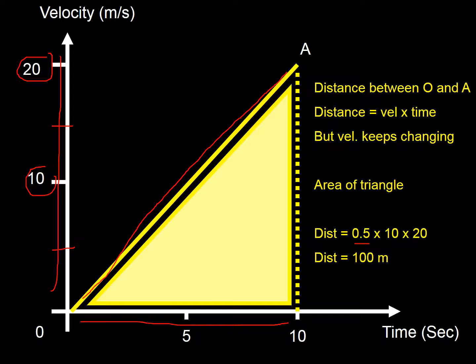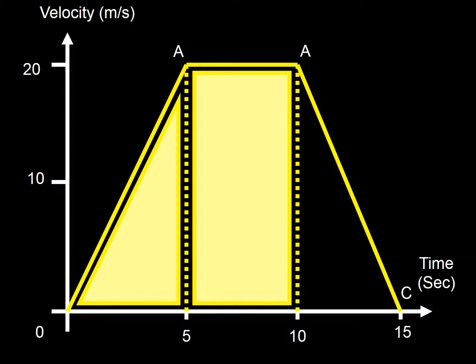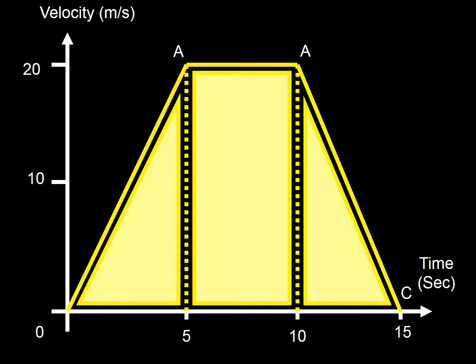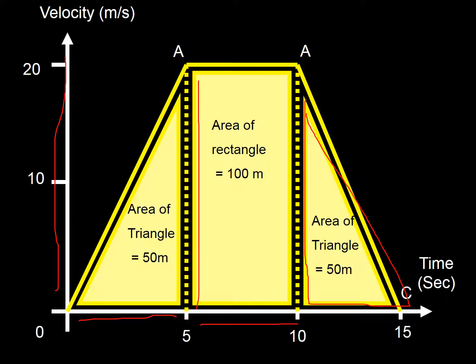So if you're on a velocity-time graph and need to work out a distance, work out the area — it doesn't matter how much the velocity changes. You can handle complex shapes too: a triangle, a rectangle, another triangle. Half times base times height: 0.5 times 5 times 20 is 50. The rectangle: 5 times 20 is 100. Add them all together — the total distance traveled is 200 meters.